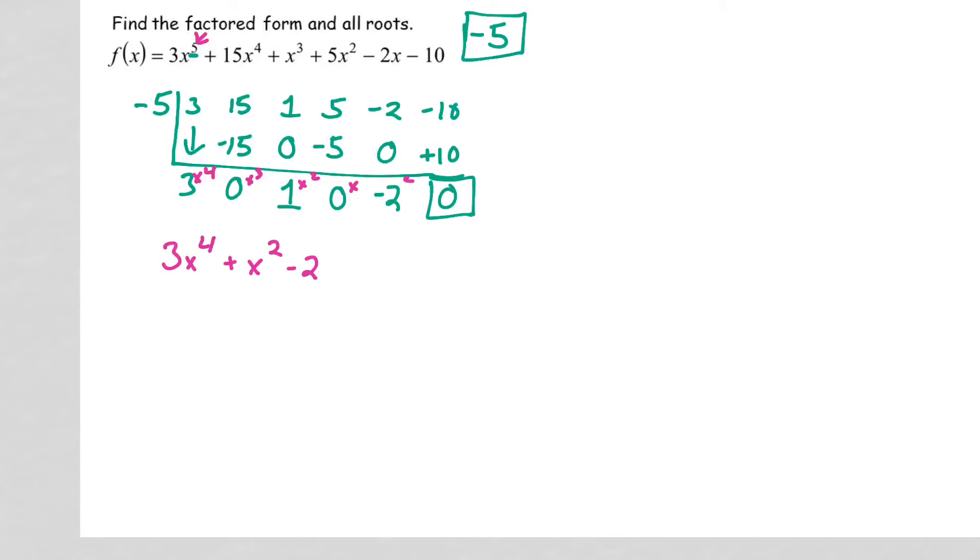I don't think that I can factor this, so I'm going to do grouping. Three times two equals six. Factors of six that add to positive one would be positive three, negative two. That gives me one.